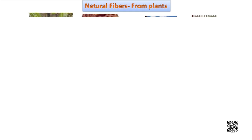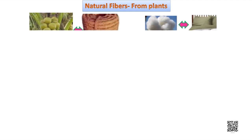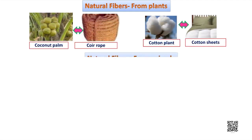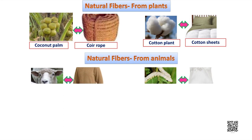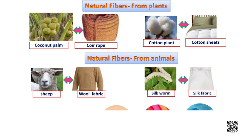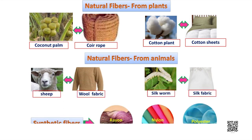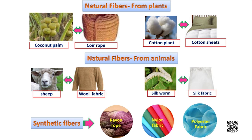Natural fibers like cotton, wool, silk, etc. are obtained from plants or animals, whereas synthetic fibers are made by human beings. Examples of synthetic fibers are rayon, nylon, polyester, etc. Now we will discuss the details of synthetic fibers.